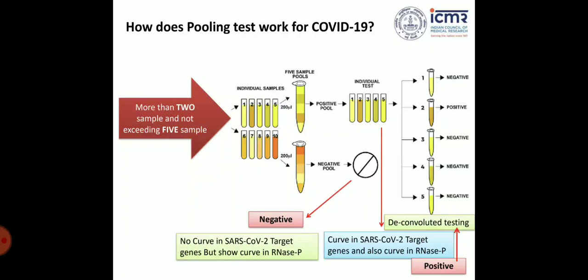When you do real-time PCR and the result turns out negative, how do you call a pool negative? There is a rule: if there is no amplification curve in the SARS-CoV-2 target genes — it could be the N gene, E gene, or RdRp gene, depending on which kit you use such as MyLab, Altona, or LabGun — and the human RNA internal control (RNase P) is showing a good curve, then you can consider the pool negative.